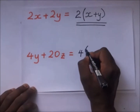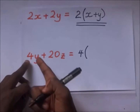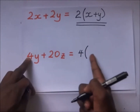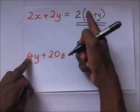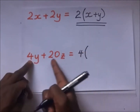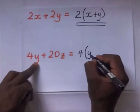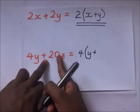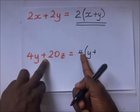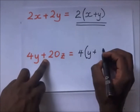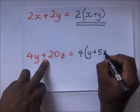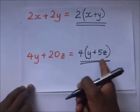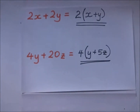Now you divide each term. 4y divided by 4 gives you y, then 20z divided by 4 gives you 5z. So it becomes 4(y + 5z). We have factorized this expression.